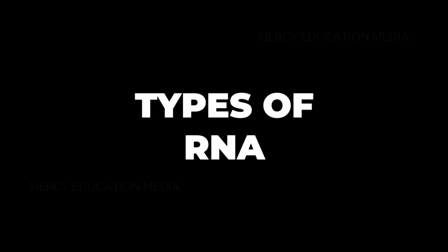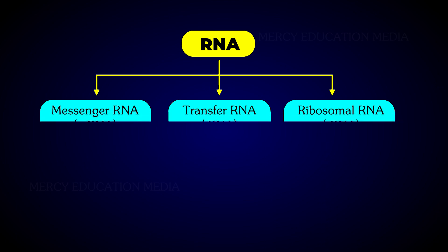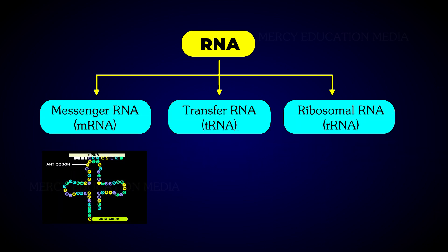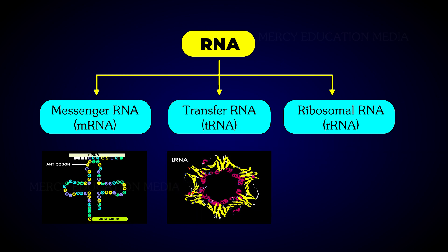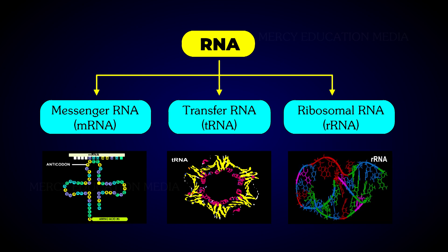Let us see the types of RNA. There are 3 major types of RNA which occur in all organisms. They are messenger RNA (mRNA), transfer RNA (tRNA), and ribosomal RNA (rRNA).